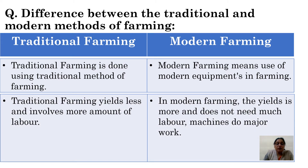Next, traditional farming yields less and involves more amount of labor. As I mentioned, in traditional farming more hard work was done by people, whereas in modern farming the yield is more and does not need much labor — machines do the major work.